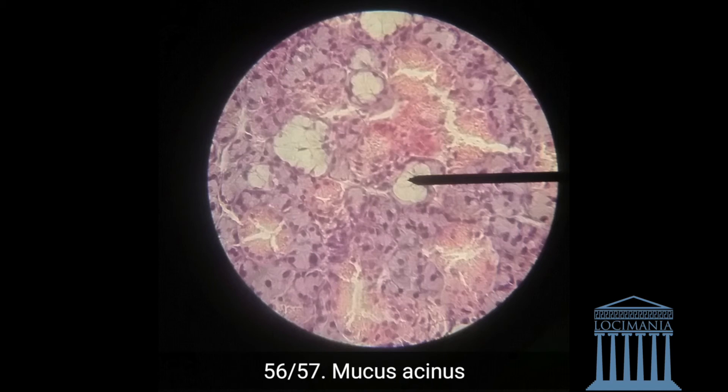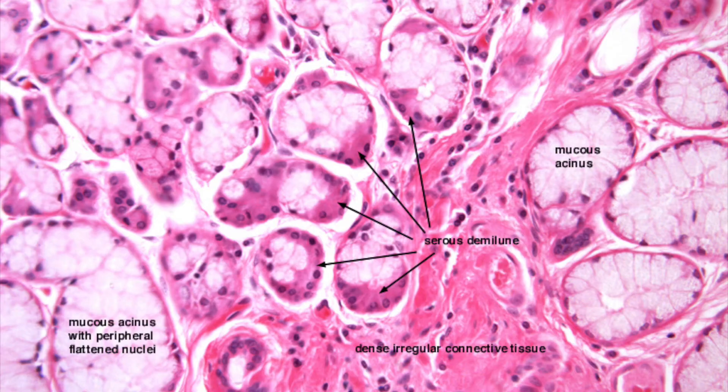The mucus acinus is hollow. Here is another picture where you can see it more clearly — the serous demilune on top of the mucus acinus, and the hollow part is the mucus acinus. And that was everything of slides 56 and 57. Thank you and please come again.